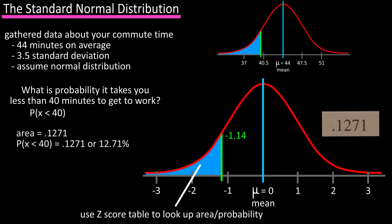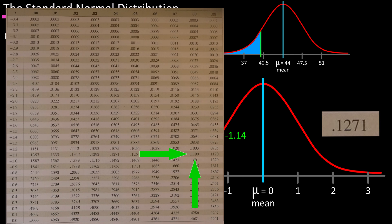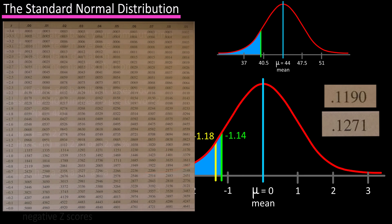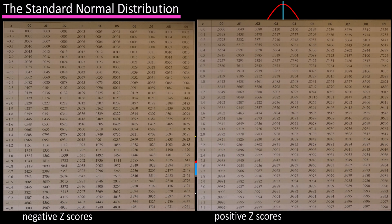This value is the area to the left of the line, or the probability. If our z-score was negative 1.18, we would go over to the .08 column, which is 0.1190. Looking at the standard normal curve with both negative 1.14 and negative 1.18 marked, negative 1.18 has a smaller area to the left — that's why its value is smaller in the table. This is the table for negative z-scores, and there is also a table for positive z-scores, which we'll use later in the video.